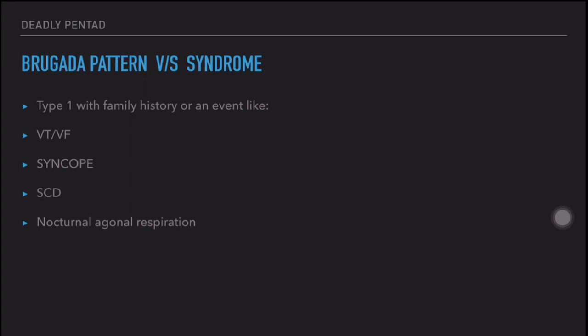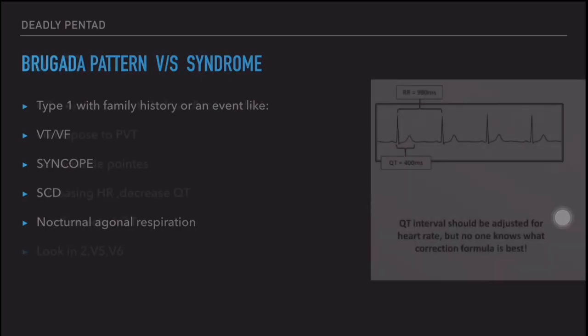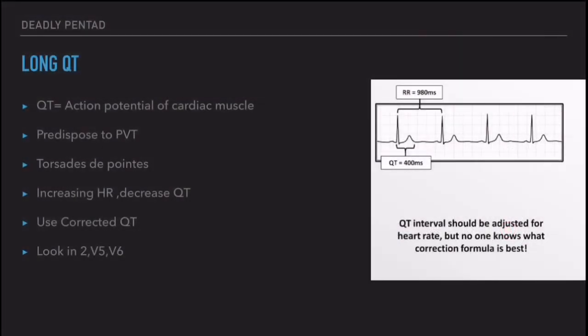The important pattern to remember is Type 1 — coved ST segment elevation with a negative T-wave in V1 to V3. This is very important. Coming to the next ECG: corrected QT.